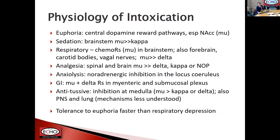The different symptoms of intoxication unfold throughout the body. The majority are through the mu receptors, but these receptors are throughout the CNS, the peripheral nervous system, and even other tissues. For example, respiratory effects occur in the brain stem via chemoreceptors, but there are also opiate receptors in the carotid bodies and vagal nerves. Analgesia occurs in both the brain and the spine. GI effects are in the myenteric and submucosal plexus of the intestine. The antitussive effect — inhibition of the cough reflex — is both at the medulla and in the peripheral nervous system and the lung.